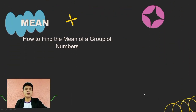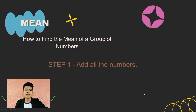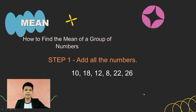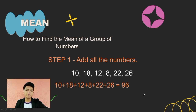Now I will introduce the steps on how to find the mean of a group of numbers. Here is Step 1: we need to add all the numbers. Take this example: 10, 18, 12, 8, 22, and 26. Step 1 — add all the numbers. So 10 plus 18 plus 12 plus 8 plus 22 plus 26 equals 96.